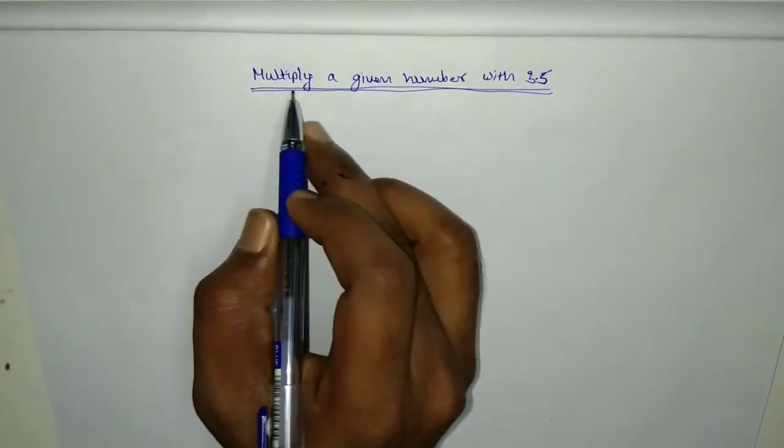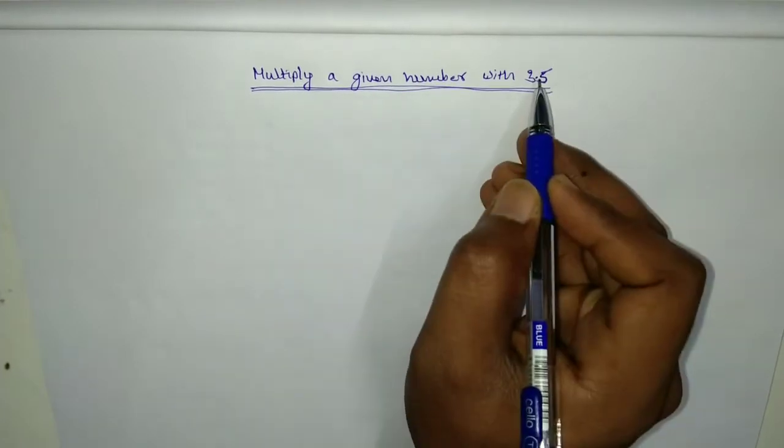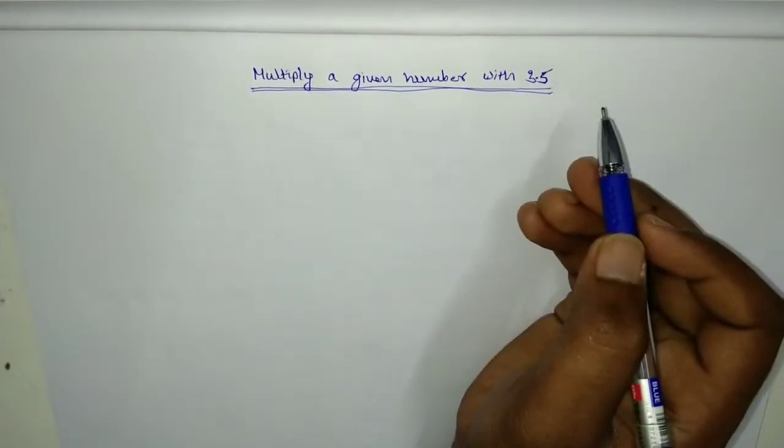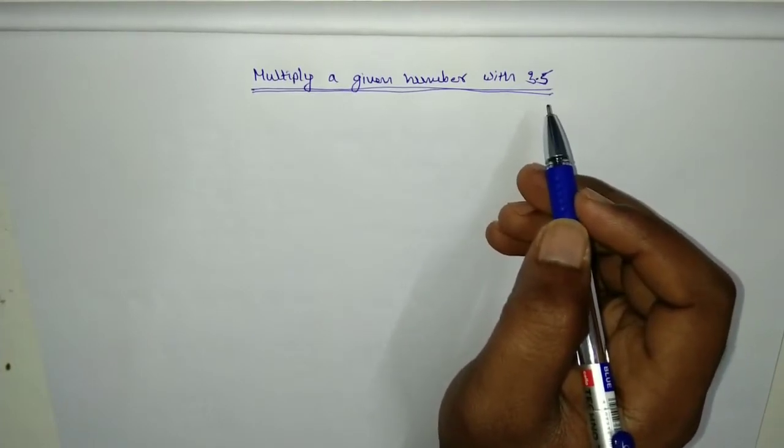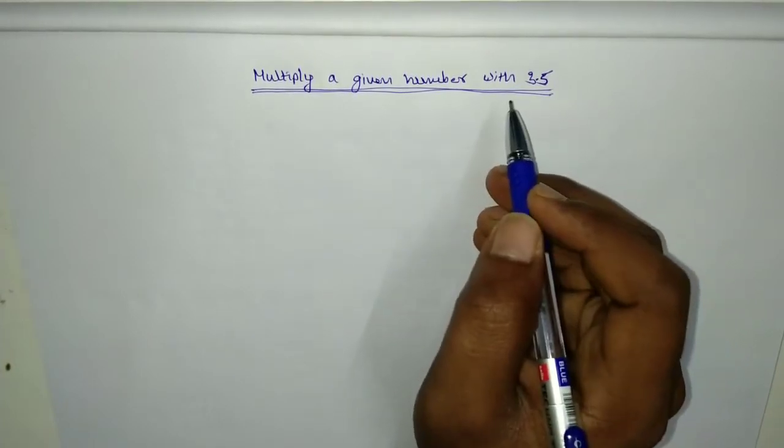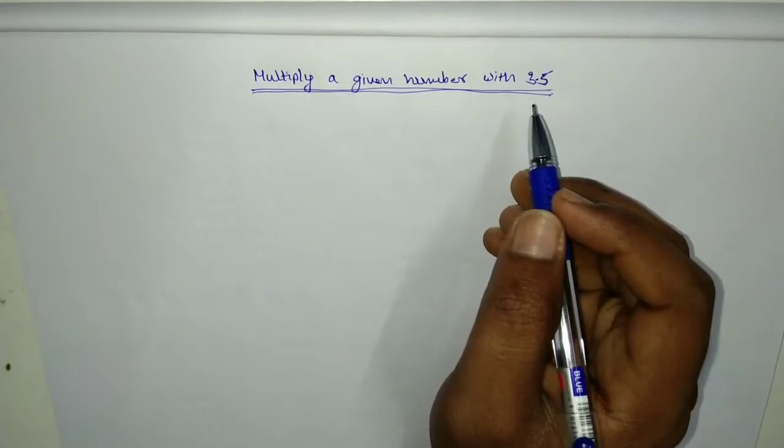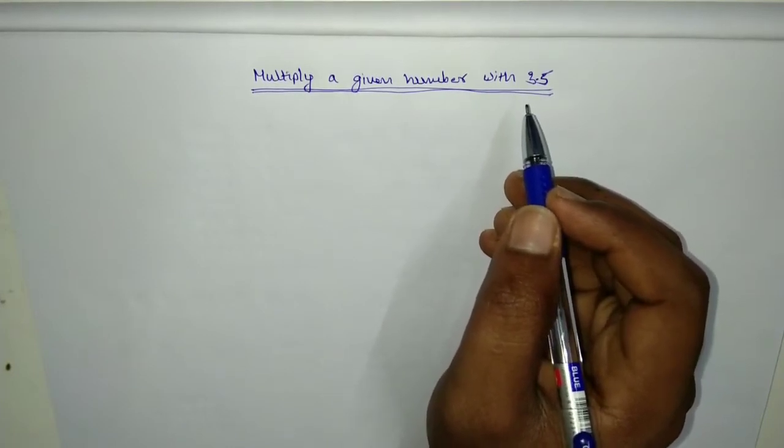We need to multiply a given number by 3.5. It is very simple using the multiplication operator, but in this we should not use the multiply operator. Using bitwise operations, we need to multiply a given number with 3.5.